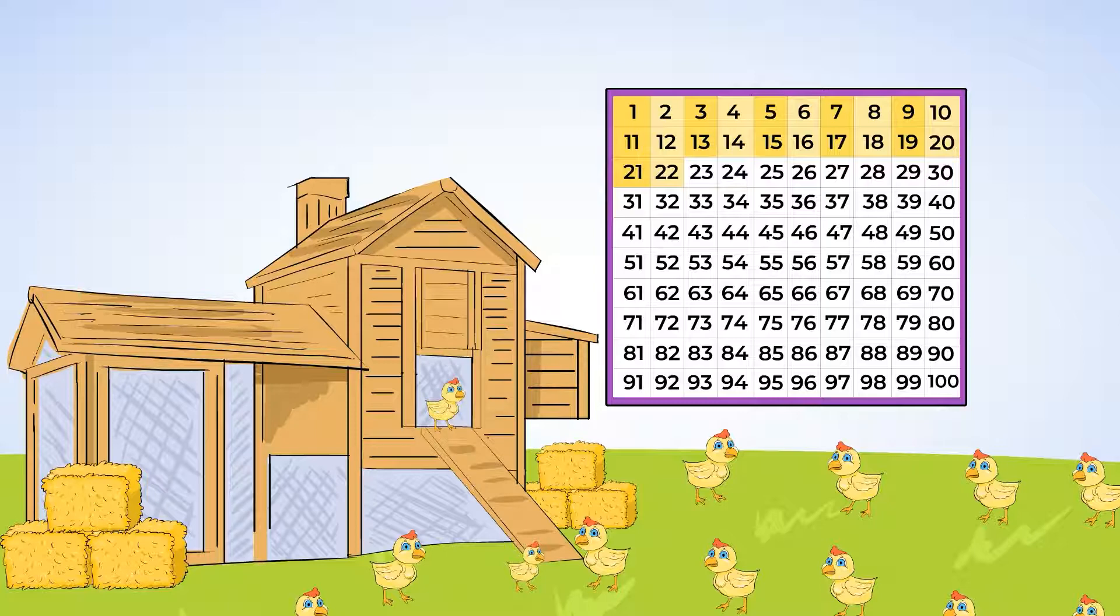Here comes another one. And now we counted 22 chicks so far. And what comes after 22? Let's look on the hundred chart again. After 22 comes 23. 23 is one more than 22. There are 23 chicks so far.